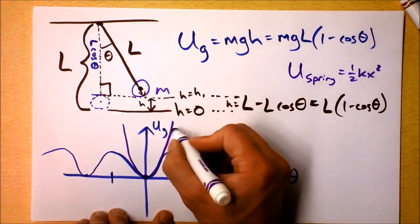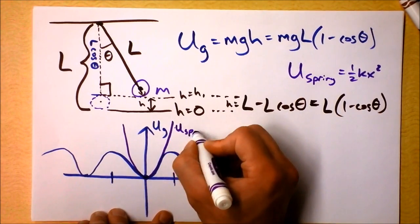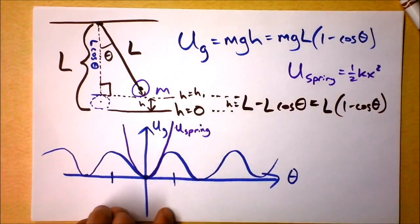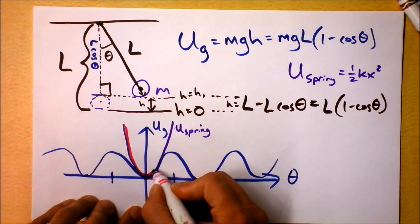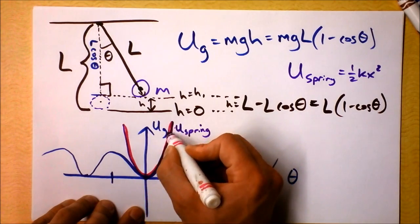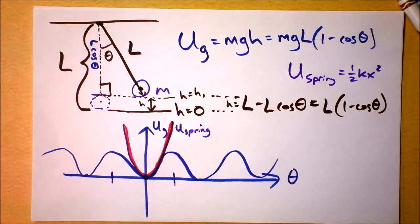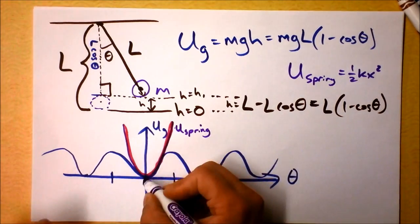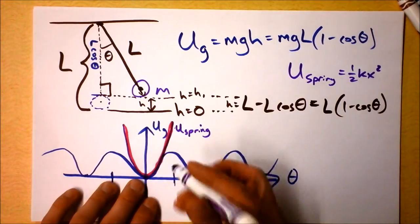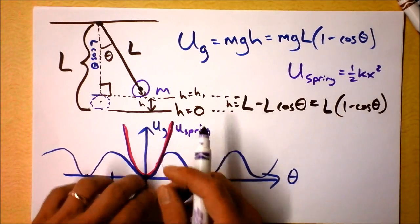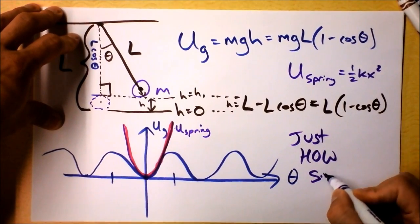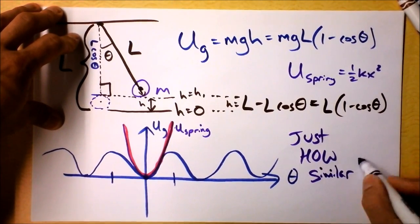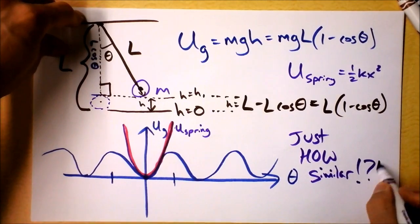Let's be strict about it. This is U for the spring in purple right there. This is U for the spring, and it's very similar in some region to the gravitational potential energy of a pendulum. Of course, they only meet at one point. They're not actually overlapping, but they're very, very close to each other. So we're going to investigate just how similar these guys are.